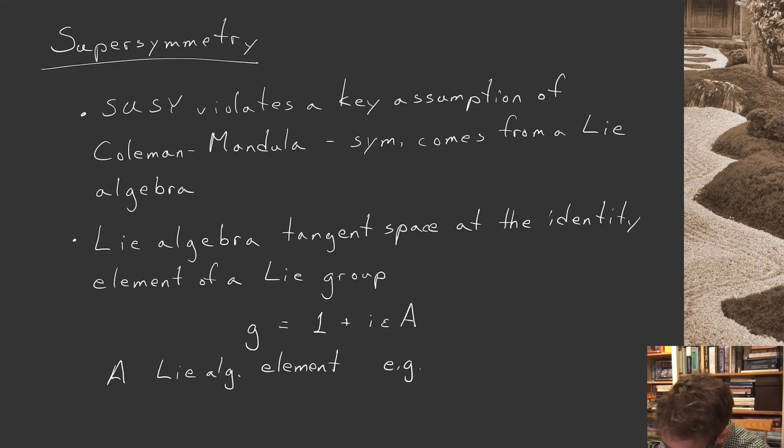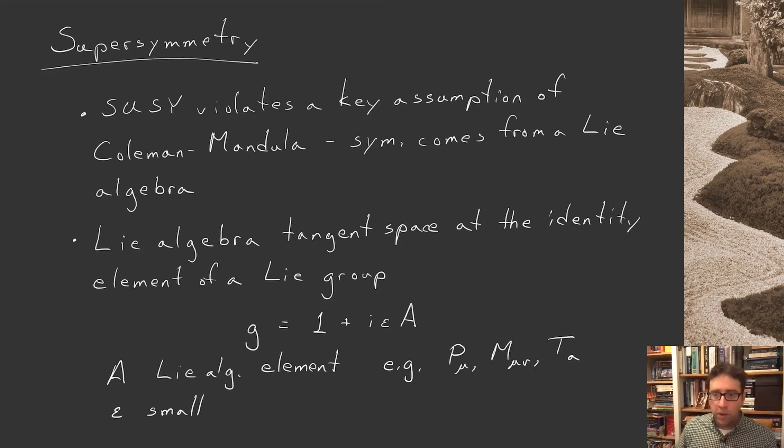We've already seen a bunch of these in the preceding discussion. We saw the momentum generator. We saw the generator of Lorentz boosts and rotations. We saw the generators of internal symmetries, Ta. These were all examples of Lie algebra elements. And of course, the other important element here, or other important requirement here is that epsilon is kept small. So we're in the tangent space formally of this Lie group.